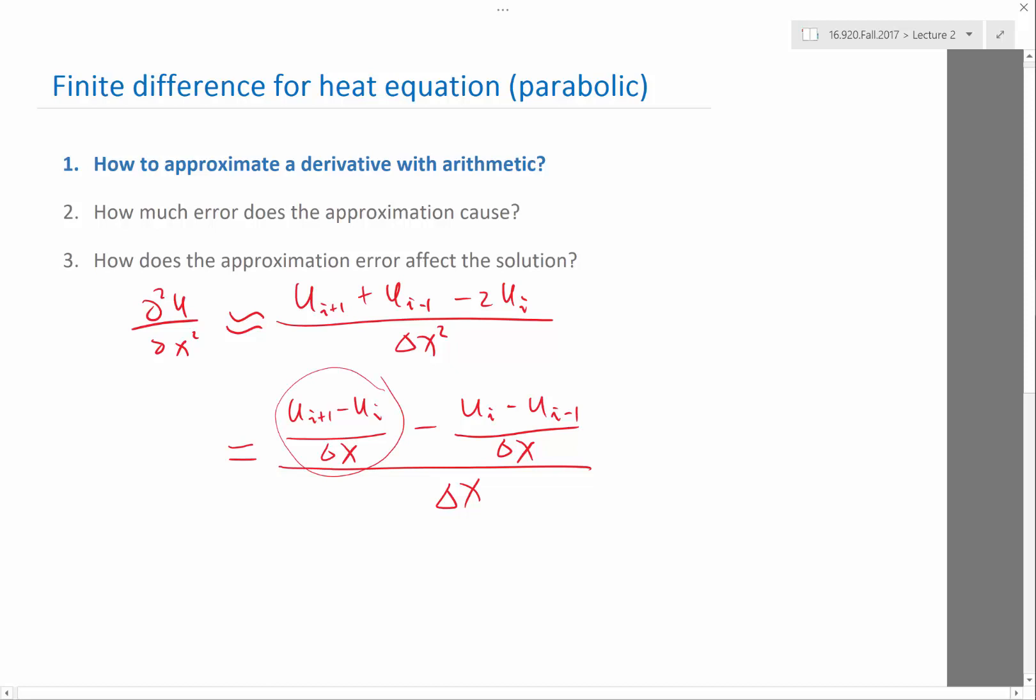This is the right slope. This is the left slope. If you draw a function u(x), I have three points: x_i-1, x_i, x_i+1. I have u_i-1, u_i, and u_i+1. The first term is the slope here.